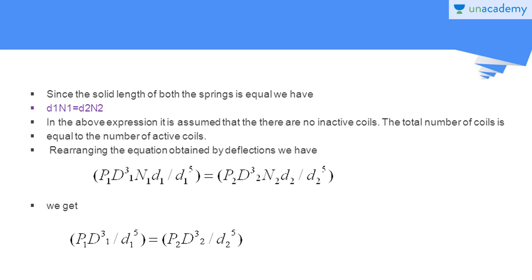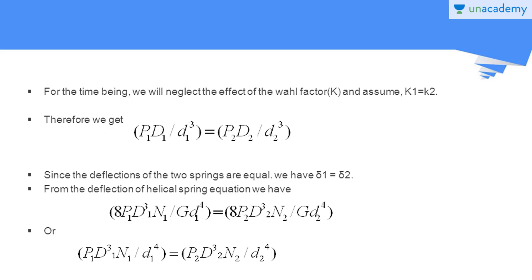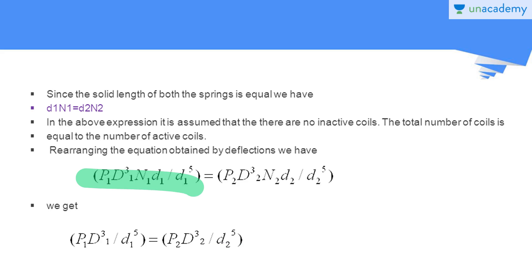It is assumed that there are no inactive coils, so the total number of coils equals the number of active coils. Rearranging the deflection equation by multiplying and dividing by d₁ and d₂ on respective sides, we get P₁D₁³n₁d₁ / d₁⁵ equals P₂D₂³n₂d₂ / d₂⁵. Since n₁d₁ equals n₂d₂ from the solid length condition, we can cancel those terms.